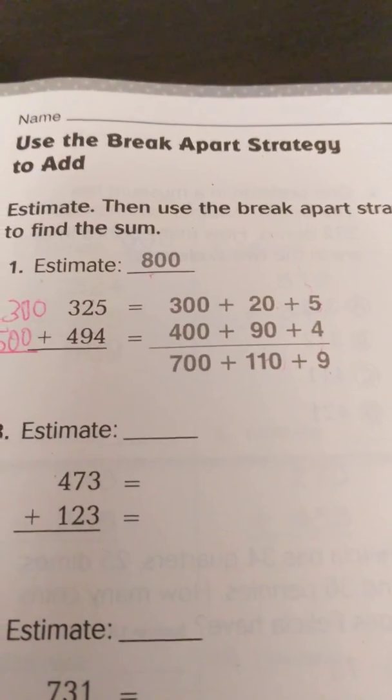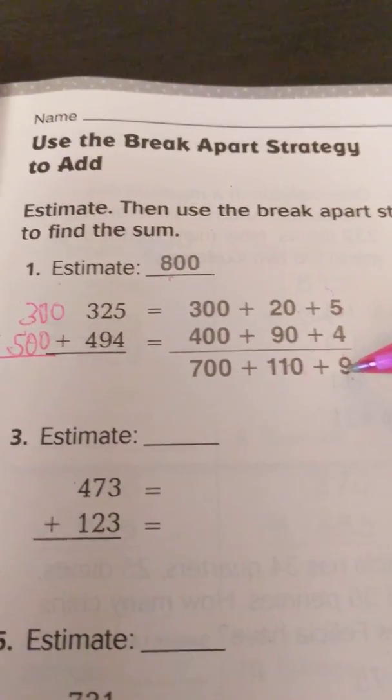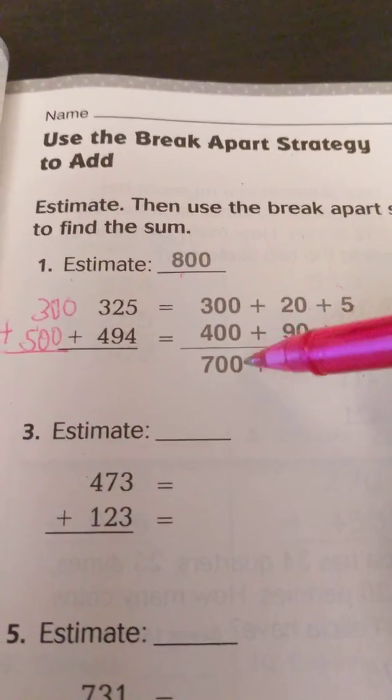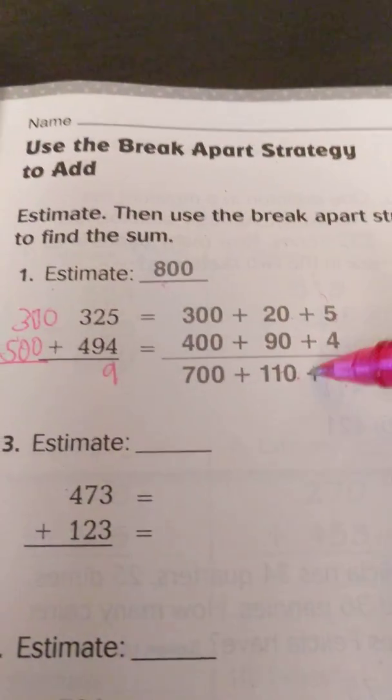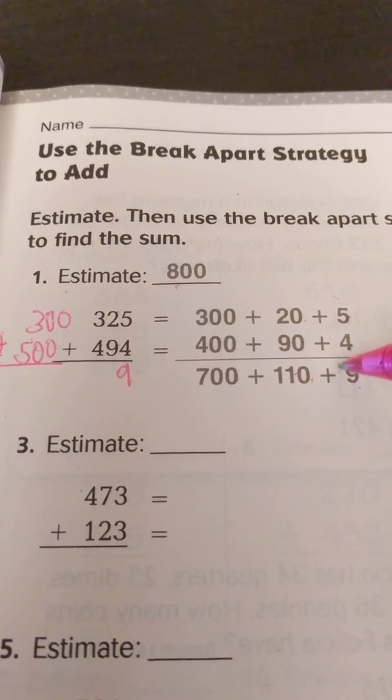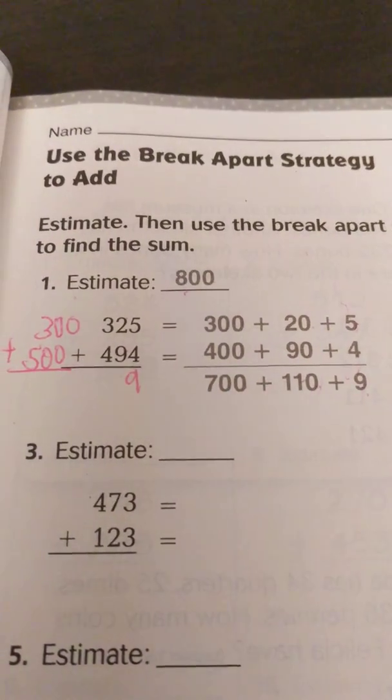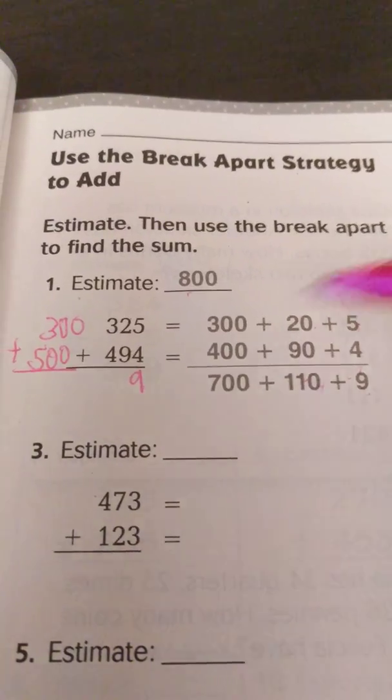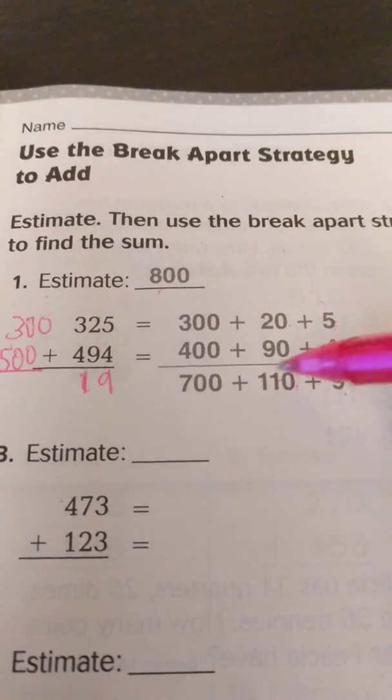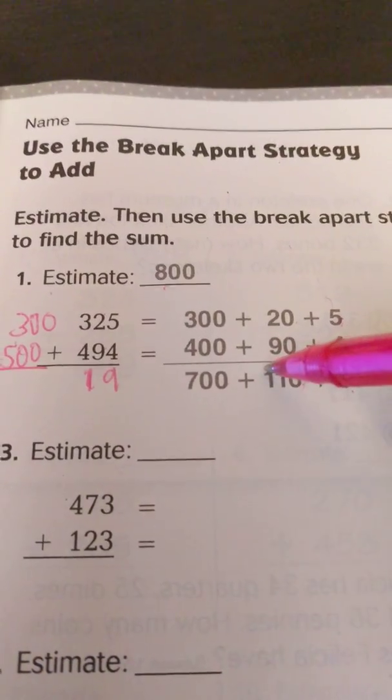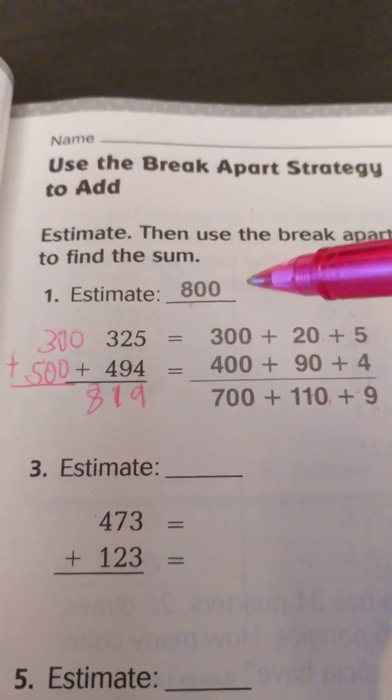So what we will do from there is I've instructed the students to start with the ones. So I go across. I see 9 ones. 0 ones plus 0 ones is 9 ones. Then I go to my tens. There's no tens. 110 plus no tens is 110. And then I have no hundreds. Plus 100 plus 700 is 800. And we have 819.